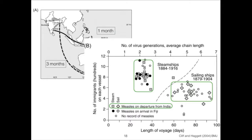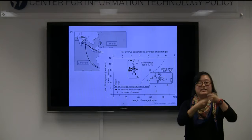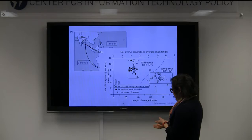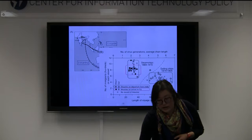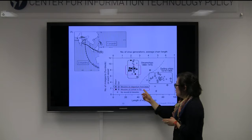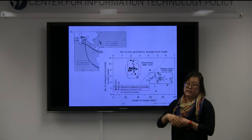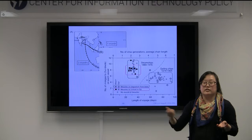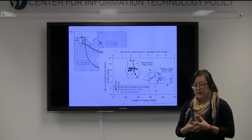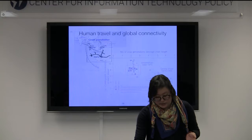Here they have the length of the voyage in days and the number of immigrants on each type of vessel — steamships versus sailing ships. The top part is about the generation time: if I have measles and give it to you, that's one generation. When you're able to travel these distances in a much shorter time, even though people were leaving with measles on both types of ships, what happens when you travel much further is you're able to introduce the disease into Fiji. When it took a really long time, measles wasn't able to persist on the ship long enough to introduce it. But as soon as you're able to travel much faster, you're able to introduce the disease.